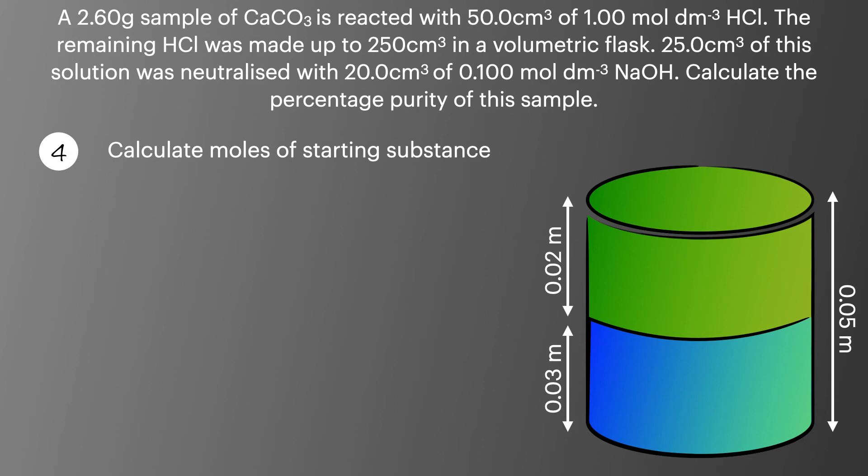In the final step we take the reacted moles of HCl and look at the chemical reaction to calculate the number of moles of calcium carbonate. In this case it's 2 to 1 so we divide our number of moles of HCl by 2. This is essentially where the back titration ends.